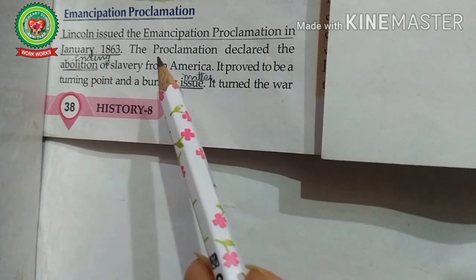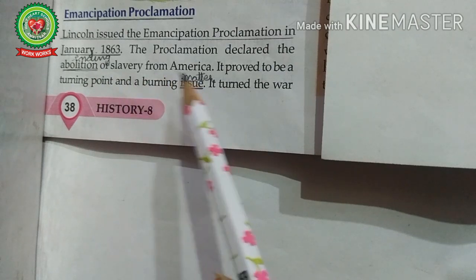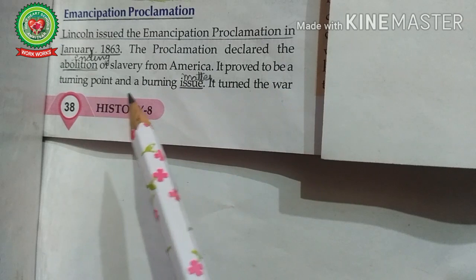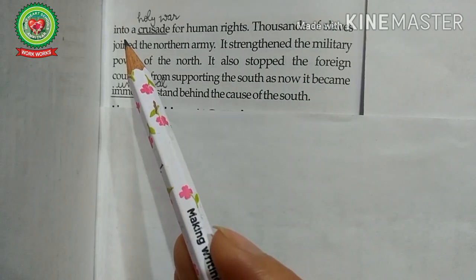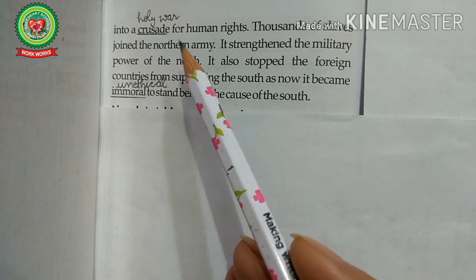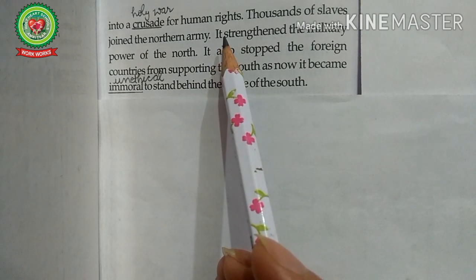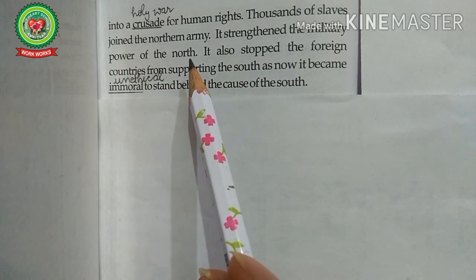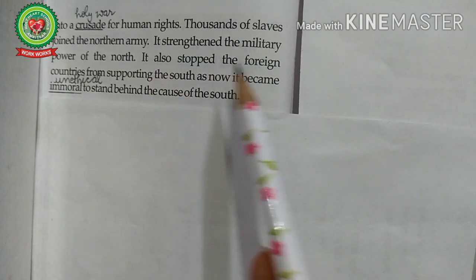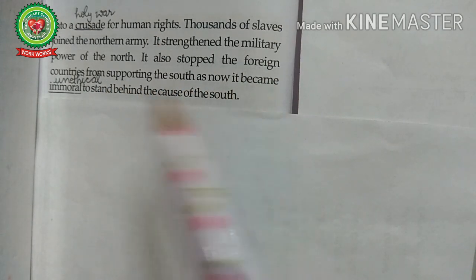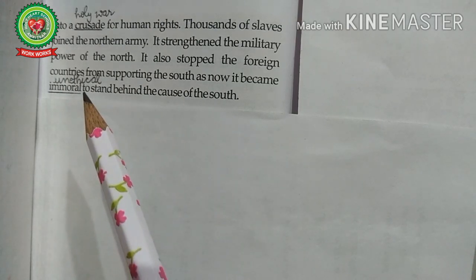Reading from the book — Emancipation Proclamation: Lincoln issued the Emancipation Proclamation in January 1863. The proclamation declared the abolition — meaning ending — of slavery from America. It proved to be a turning point and a burning issue. It turned the war into a crusade for human rights. Thousands of slaves joined the northern army, strengthening the military power of the north. The proclamation allowed slave states fighting on the side of the north to retain their slaves so as not to drive them to the other side. Areas occupied by Union forces were technically not required to free their slaves. It also stopped foreign countries from supporting the south, as it became immoral — meaning unethical — to stand behind the cause of the south.